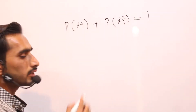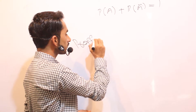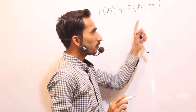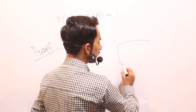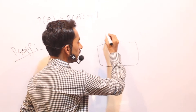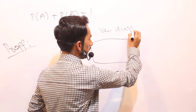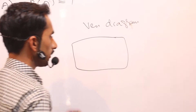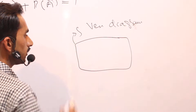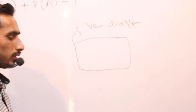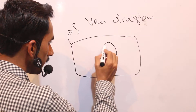To prove this, we use the concept of a Venn diagram. Here is the Venn diagram. This is the sample space.